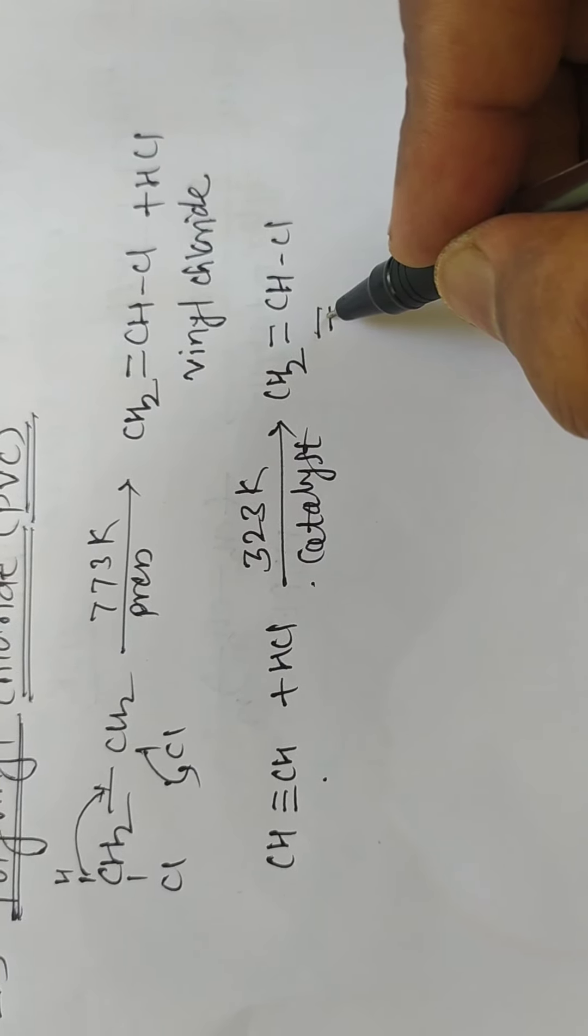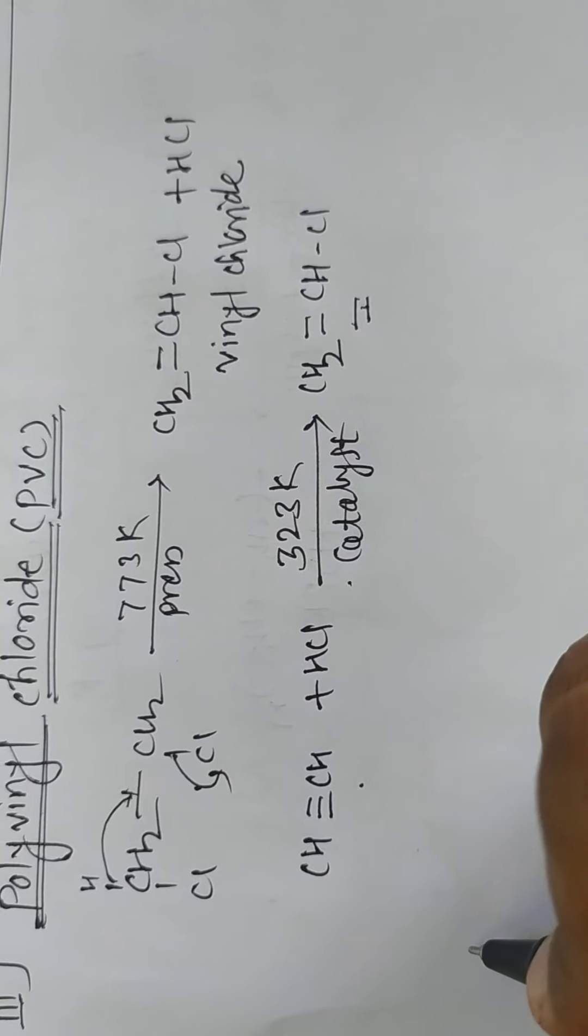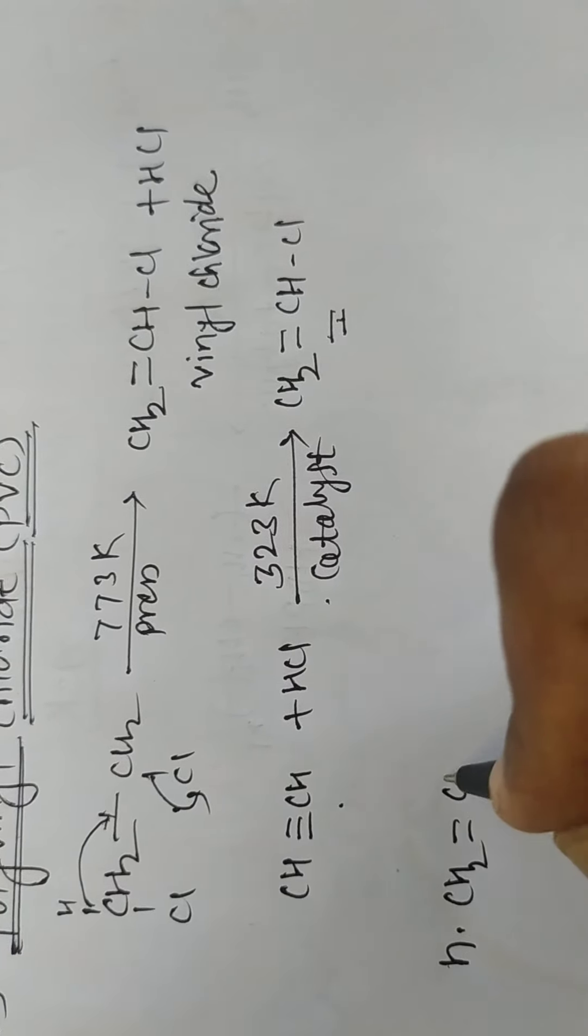At high pressure in presence of suitable catalyst, when n number of CH2 double bond CHCl monomers undergo polymerization, we get the polymer chain.